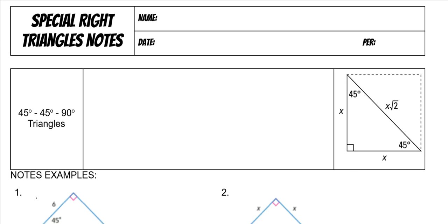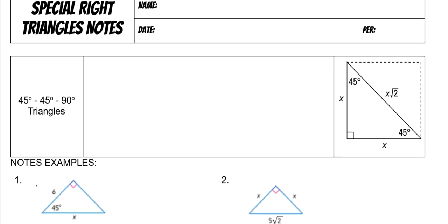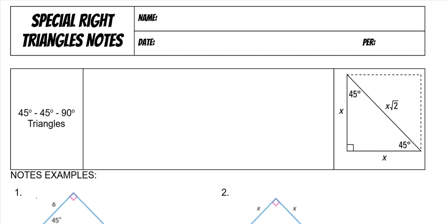I'm going to go over special right triangles today. This is something you should have done in middle school whenever you covered 8th grade math. So my freshmen, that would have been in 7th grade, and my sophomores, that would have been in 8th grade. But you don't spend very long on it and don't go into the depth that we do. But it is something you should have seen before.